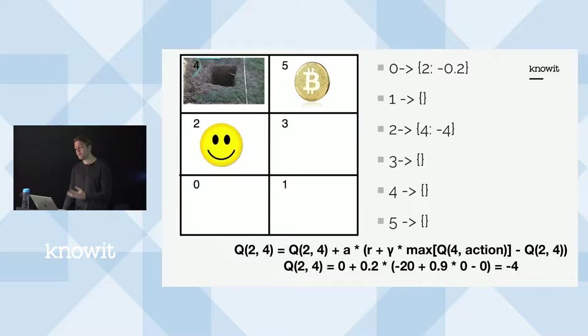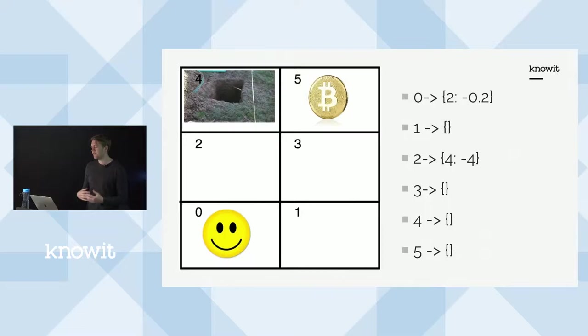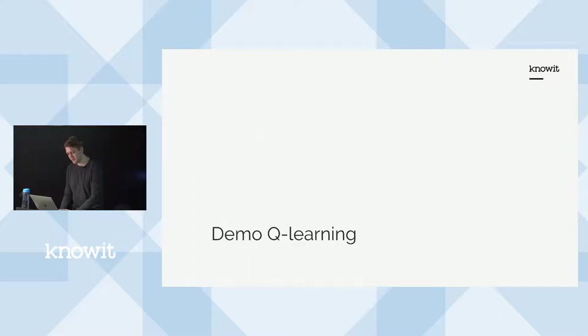Now you have some Q values to use. If the agent exploits, it goes to state one because state one has a zero value whereas going to tile two has minus 0.2. Or it can explore randomly. After a while this converges — if you've implemented the update rule correctly, you'll get an accurate picture of the environment and the smiley face will move up to the coin.